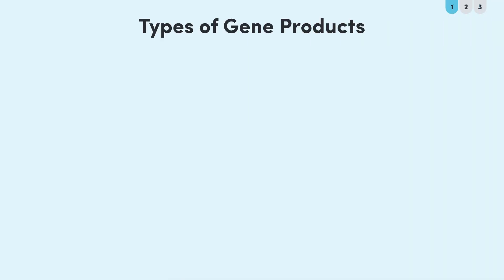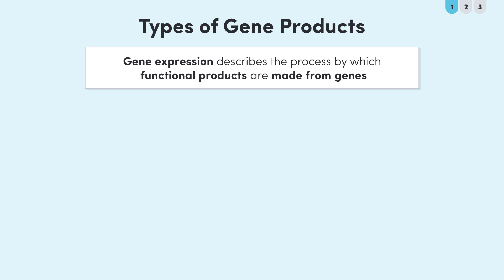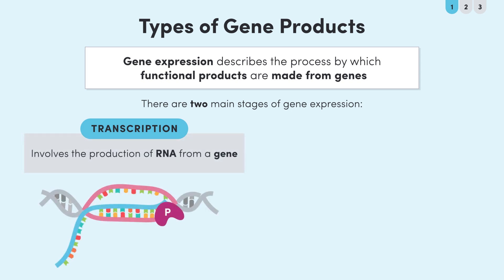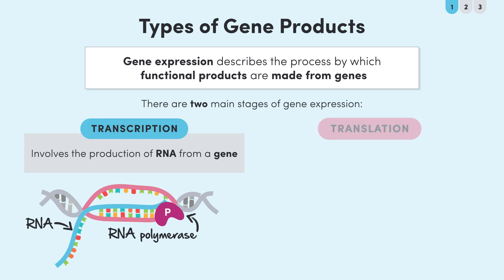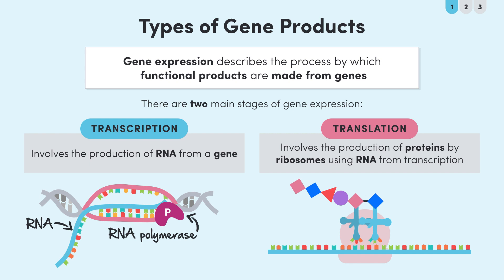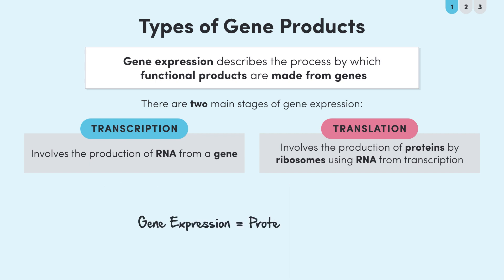The term gene expression describes the process by which functional products are made from genes. These fall into two main stages. The first stage is transcription, which involves the production of RNA from a gene. The second stage is translation, which involves the production of proteins by ribosomes using RNA made in transcription as a template. If you've checked out our lessons on protein synthesis, gene expression probably sounds pretty familiar.